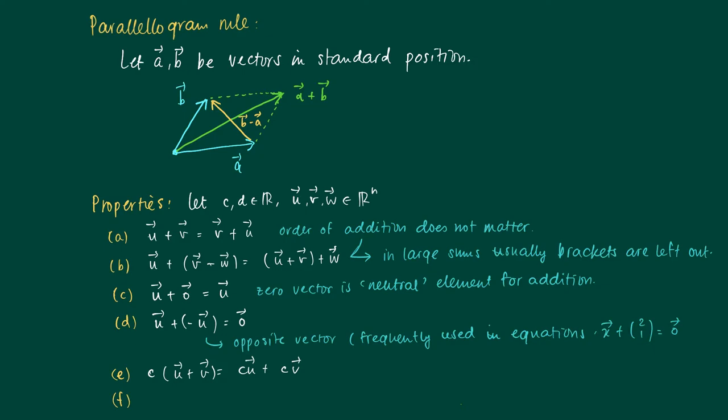f. If we have (c plus d) times a vector v, then it's the same as c times u plus d times u. So these are all kind of trivial relations. We'll prove some of them.